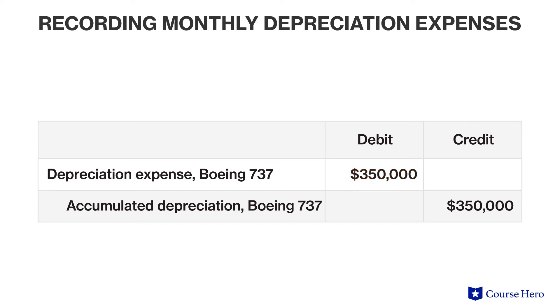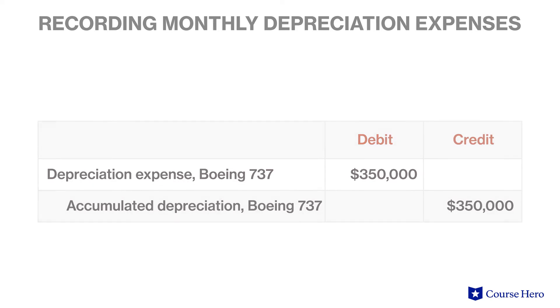The adjusting entry to be made at the end of the period would be a debit — an increase to depreciation expense — and a credit — an increase in accumulated depreciation.